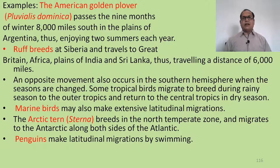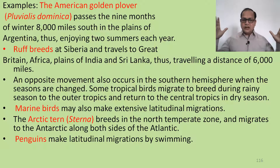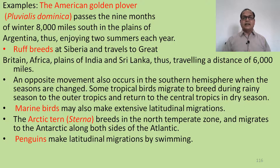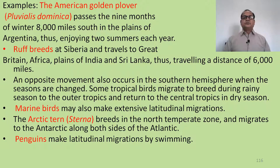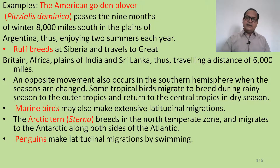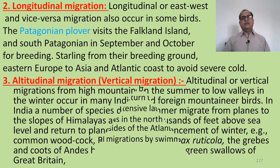Marine birds also make extensive latitudinal migrations. The Arctic tern is one of the longest migrators. The Arctic tern (Sterna species) breeds in the North American temperate zone and migrates to the Antarctic along both sides of the Atlantic Ocean. Penguins make latitudinal migration by swimming in the ocean.